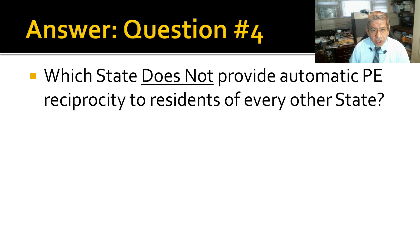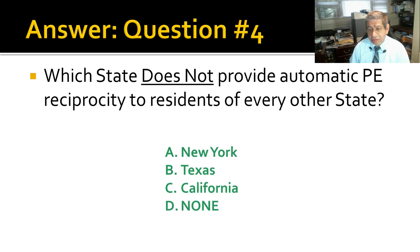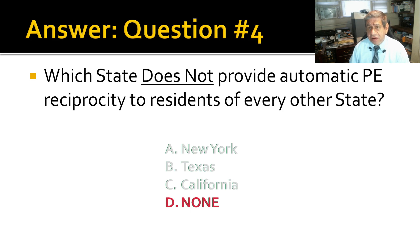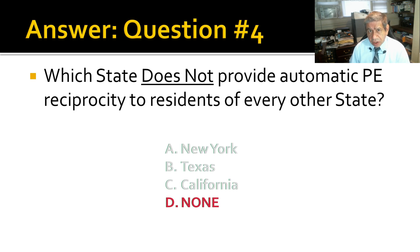Question number 4: Which state does not provide automatic PE reciprocity to residents of every other state? The answer is none. Although some states make it easier to earn your PE license when you already have a license from another state, none of the states give automatic reciprocity. The best place to check is with your board on their website.